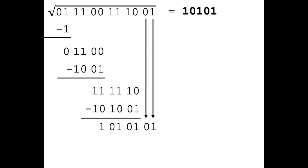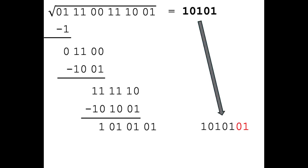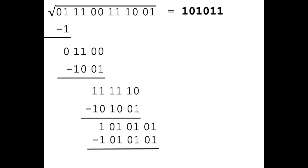And then we pull down the next pair of digits. Like before, we continue by taking the digits we have calculated so far and append the digits 0 and 1 to it. This yields the number 1010101. Now we are going to compare the remainder against the number we constructed. The remainder is exactly equal to the number we constructed, which means that the next digit will be a 1. By subtracting those two, the remainder becomes 0. Since there are no other pairs of digits left to pull down, our calculation is completed.